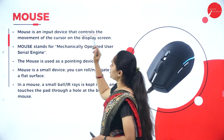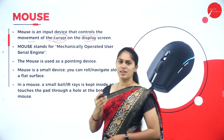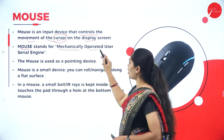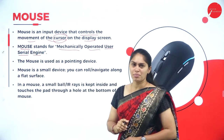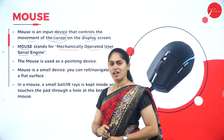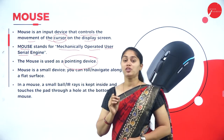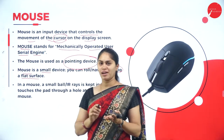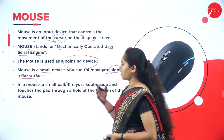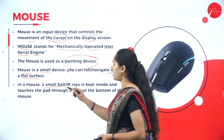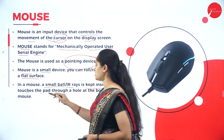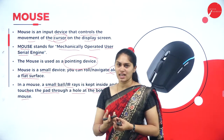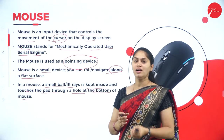The next input device is the mouse, also one of the most commonly used input devices. It controls the movement of the cursor on the display screen, and the cursor specifies a particular location on the computer. MOUSE stands for Mechanically Operated User Serial Engine. It is also called a pointing device. The mouse is a small device you can roll or navigate along a flat surface, and it contains a small ball or IR (infrared) rays kept inside, touching the pad through a hole at the bottom.